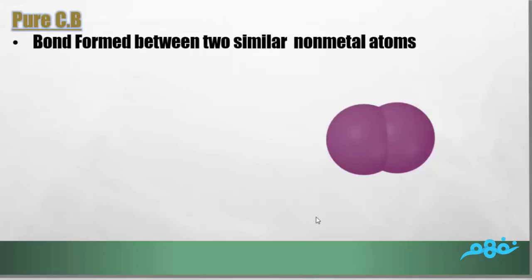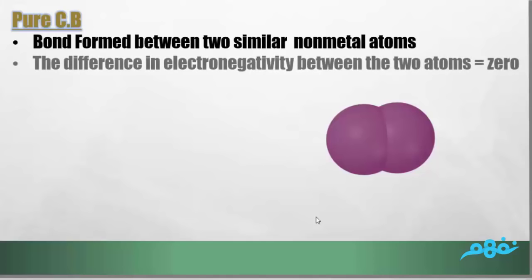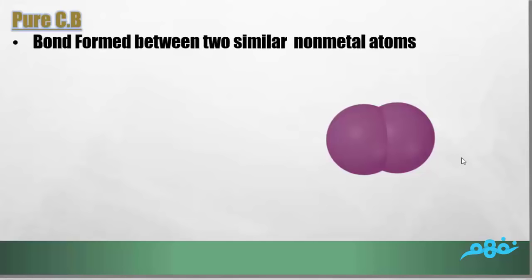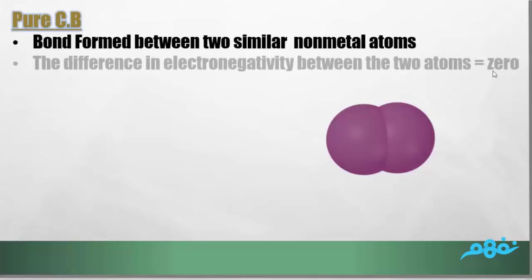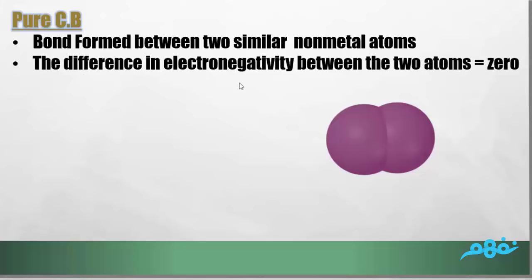We are going to start with pure covalent bonds. These bonds are formed between two similar non-metals. They are similar because they have the same electronegativity, and when we subtract the electronegativities from each other, they give us zero.